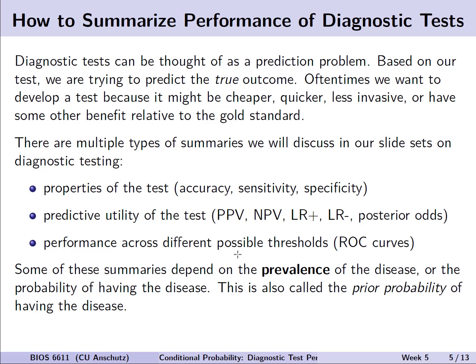So how do we summarize the performance of diagnostic tests? We can really think of these as a prediction problem. Based on our tests, we are trying to predict the true outcome. Now oftentimes, we want to do this because it might be cheaper, quicker, less invasive, or have some other benefit relative to the gold standard, or knowing that true status of the disease otherwise. Now, we'll see in these following lecture sets, there are multiple types of summaries that are beneficial in their own ways, that we'll look at, in this case, the properties of the test, such as accuracy, sensitivity, and specificity. In the next lecture deck, we'll look at the predictive utility of the test with things like predictive values, likelihood ratios, and the posterior odds. And finally, we'll close out this set of three lecture sets with the performance across different possible thresholds as evaluated by receiver operating characteristic curves, or ROC curves.